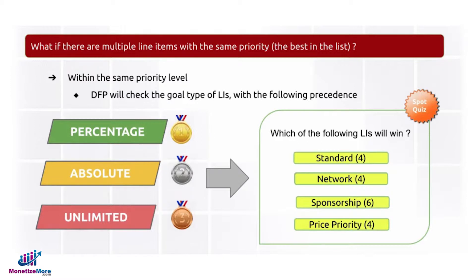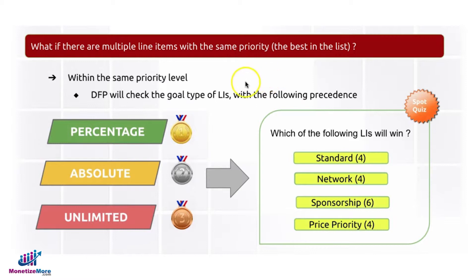Hello everyone, today we're going to talk about how DFP or Google Ad Manager chooses the best line item to serve based on their line item type or priority. Here I have a quick spot quiz for you: what if there are multiple line items with the same priority — which one, or how, will DFP choose the best one to serve?